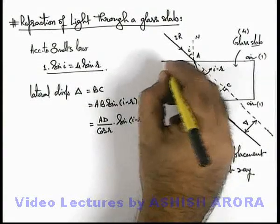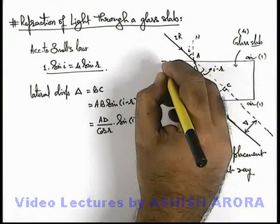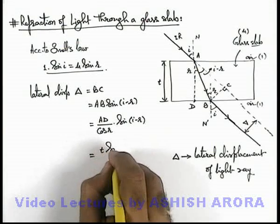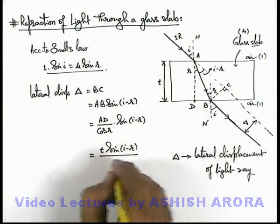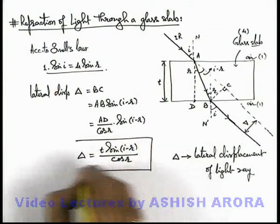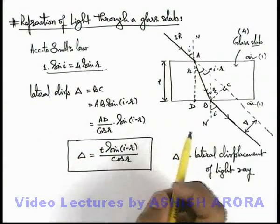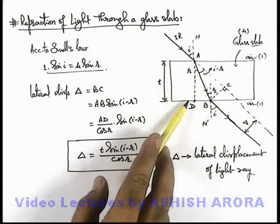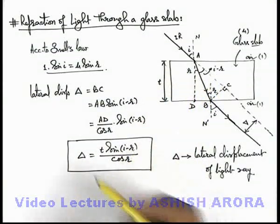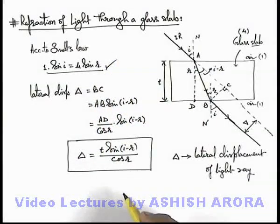If we consider thickness of glass slab is equal to t, then we can write it t sin(i - r) divided by cos r. So this is the value of lateral displacement of the light ray when it passes through the glass slab having refractive index μ, and the value of angle of refraction we can calculate by using Snell's law.